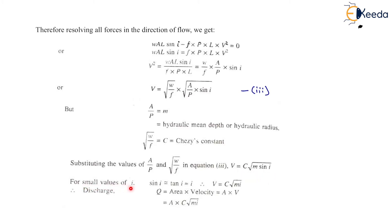For small values of i, sin(i) equals tan(i) which equals i. Therefore the equation becomes V equals C·√(M·i). Now for finding the discharge Q, which equals area into velocity, we have Q equals A·C·√(M·i). That is the discharge through open channels by Chezy's formula. Thank you very much, students.